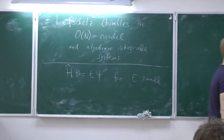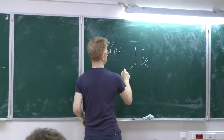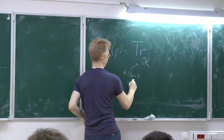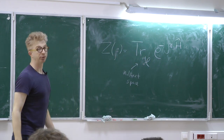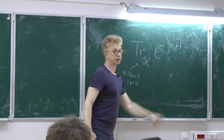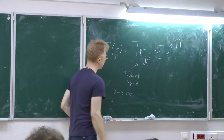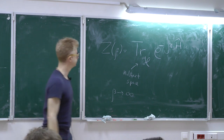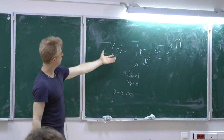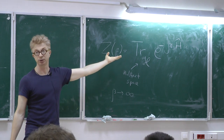One way to study that part of the spectrum is to look at the partition function, which is the trace over the Hilbert space of the Euclidean time evolution operator as a function of the inverse temperature or Euclidean time. For beta going to infinity, the main contribution to this partition function comes from the low-lying energy states. So if we have a way of estimating this partition function for large beta, we will learn something about the spectrum.